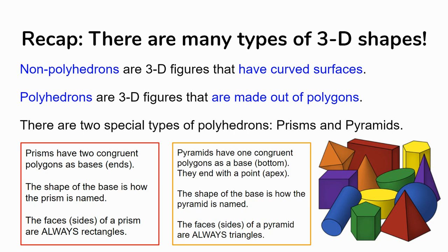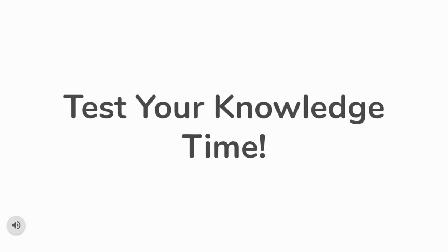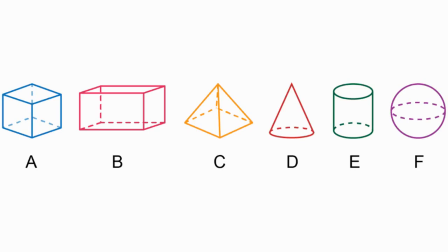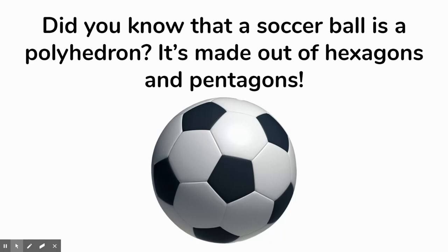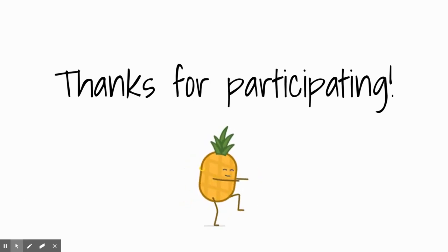Now we're going to test your knowledge. Here's a fun fact: did you know that a soccer ball is a polyhedron? If you've ever studied a soccer ball closely, it's made out of hexagons and pentagons — the black spots are pentagons and the white panels are hexagons. Good job today, thanks for participating, and I'll see you again in the next video.